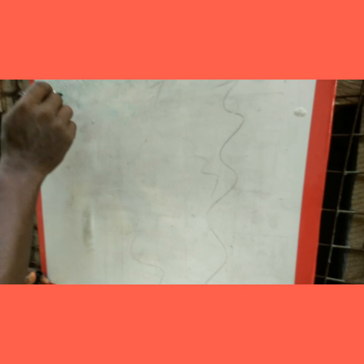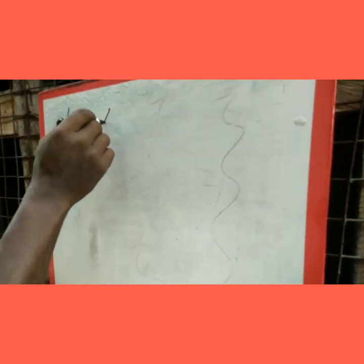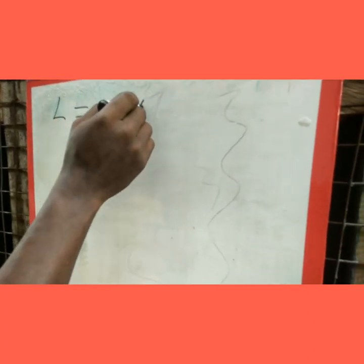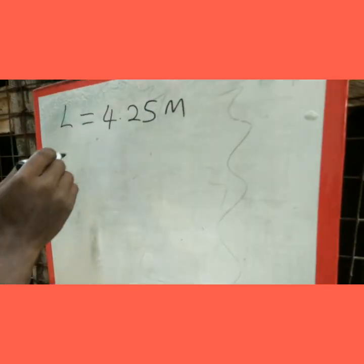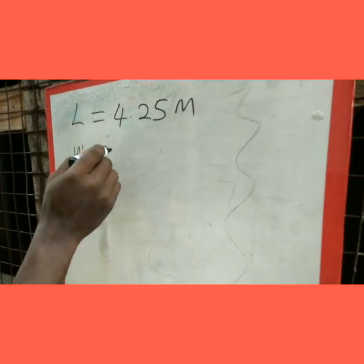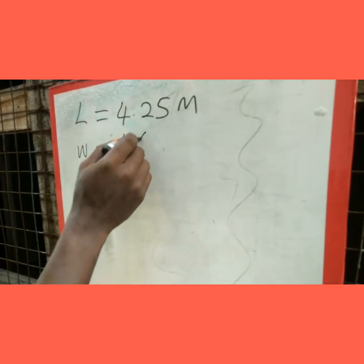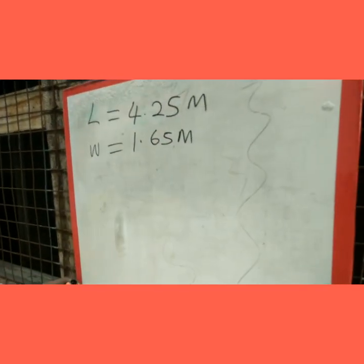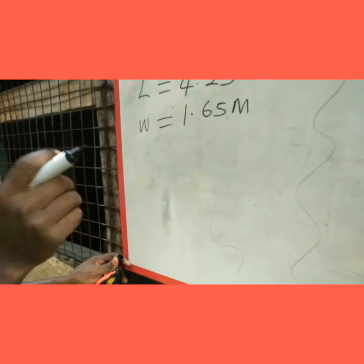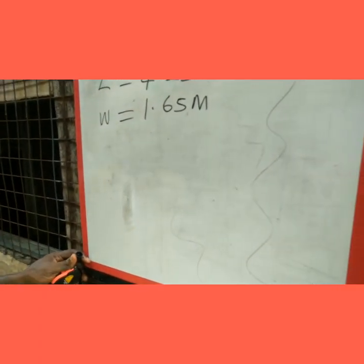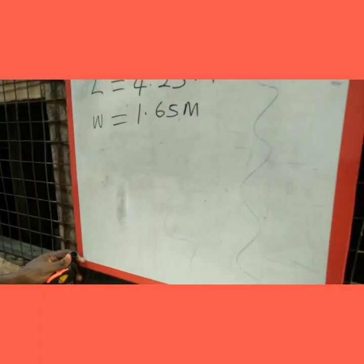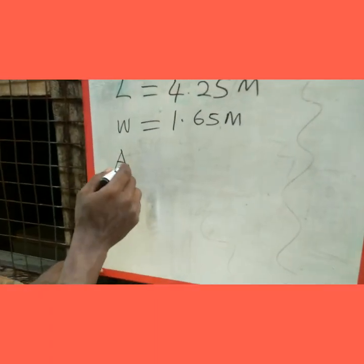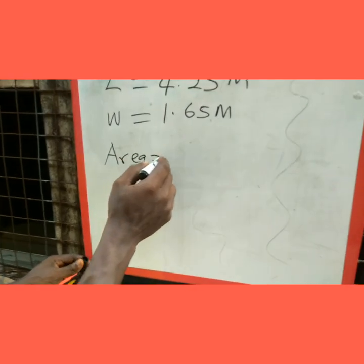Our length L is 4.25 meters, our width W is 1.65 meters. To know the stocking capacity of this pond, I'm going to calculate the area of the pond. Area is equal to length times width.